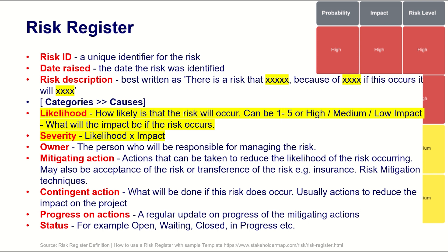You need to identify the likelihood of the risk — how likely it is that the risk will occur. In this slide I'm showing five different scales, but there is also a possibility to have three different scales: high, medium, or low. You can adopt different types of likelihood scales. Then you need to talk about severity, which is calculated by multiplying the likelihood by the impact of the risk.